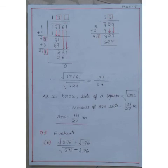I get that square root of 17161 is 131 and square root of 729 is 27. Therefore, root over 17161 divided by 729 is equal to 131 by 27. So, if I convert it to mixed fraction, I get the answer.